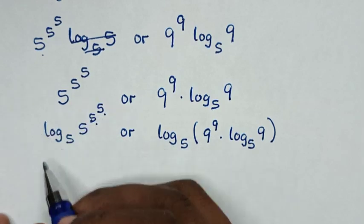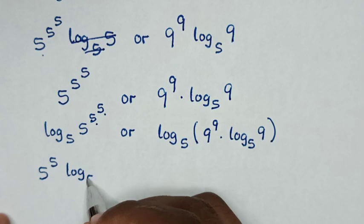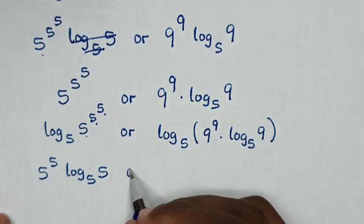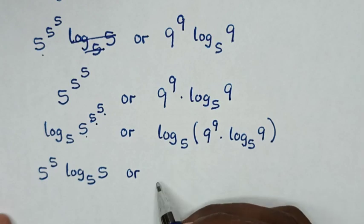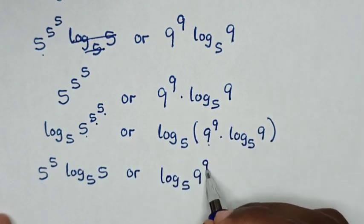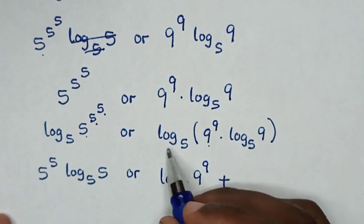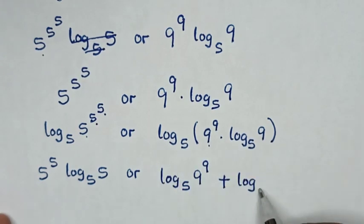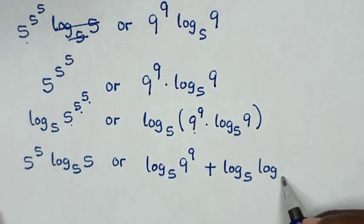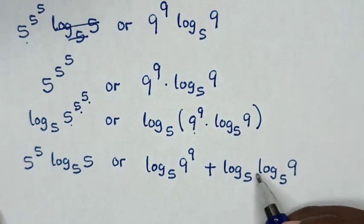In the next step, the two powers of 5 move to the front, giving 5 power 5 times log base 5 of 5. On the other side we get log base 5 of (9 power 9) plus log base 5 of (log base 5 of 9), since the product inside becomes a sum of logs.